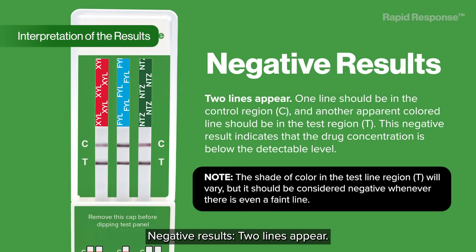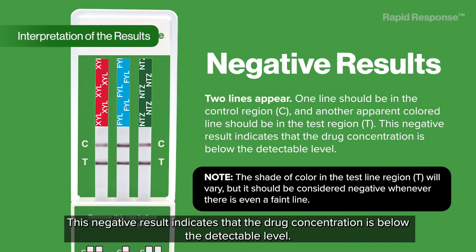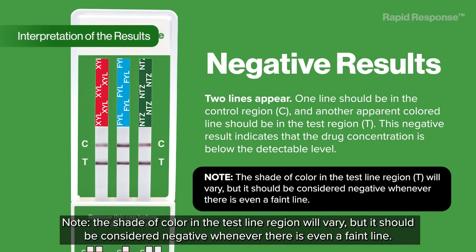Negative results: two lines appear. One colored line should be in the control region, and another apparent colored line should be in the test region. This negative result indicates that the drug concentration is below the detectable level. Note: the shade of color in the test line region will vary, but it should be considered negative whenever there is even a faint line.